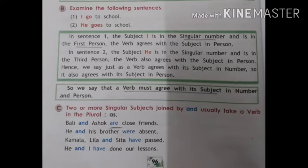Next slide B. Examine the following sentences: number one, 'I go to school'; number two, 'He goes to school.' In sentence one, the subject 'I' is in the singular number and is in the first person — the verb agrees with the subject in person. In sentence two, the subject 'he' is in the singular number and is in the third person, and the verb also agrees with the subject in person.